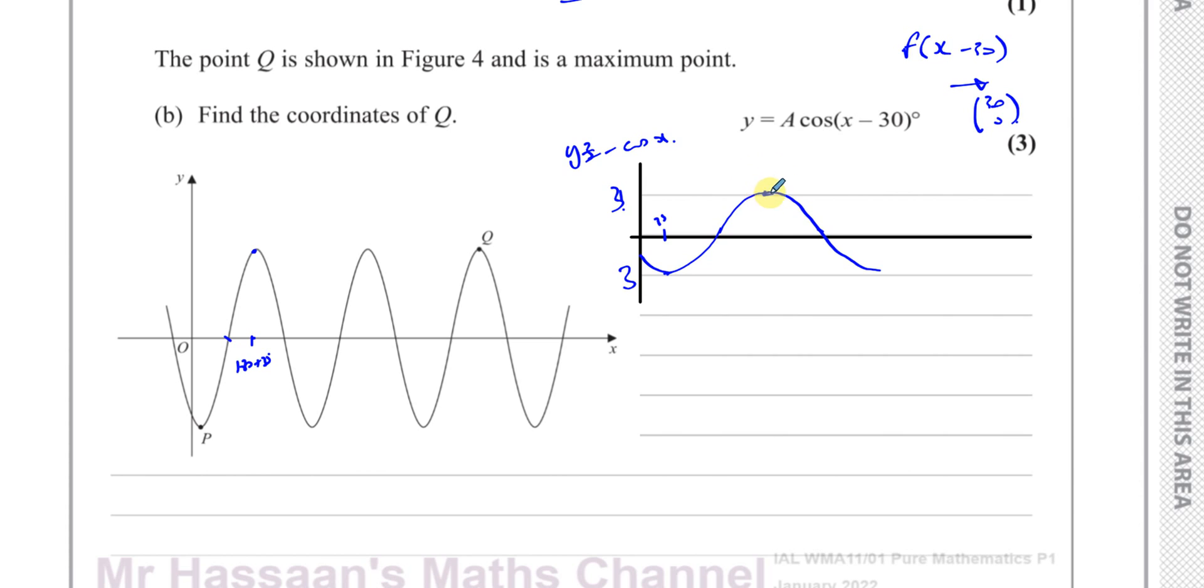And the next time it reaches this high point, well, it repeats every 360 degrees. So this point is going to be, so that's 210. This is going to be 210 plus 360. Because it repeats that same pattern every 360 degrees. So that's going to be 570 degrees. And then again, it's going to reach its maximum after 360 degrees. So it's 570 plus 360, which is going to be 930 degrees. So the coordinates of Q are going to be 930 and 3, because the highest point it reaches is 3.